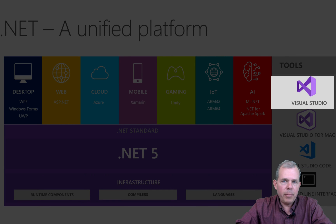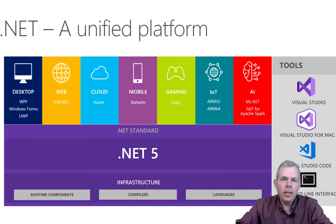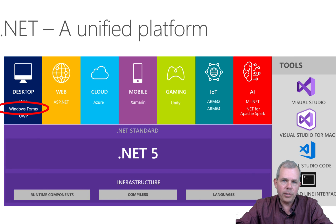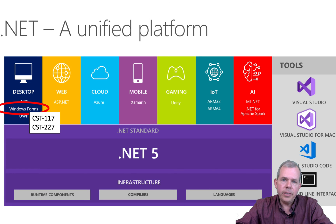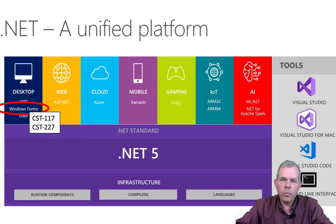Visual Studio is the common tool that most people think of when they talk about .NET development. Here at Grand Canyon University, when we talk about .NET, we focus on two technologies primarily. We call Windows Forms apps our Windows apps, and we have two classes called CST 117 and 227. CST 117 is the Introduction to C# class, and 227 is sometimes called C# 2. Both of those use Windows Forms, or WinForms, to create standard Windows applications.